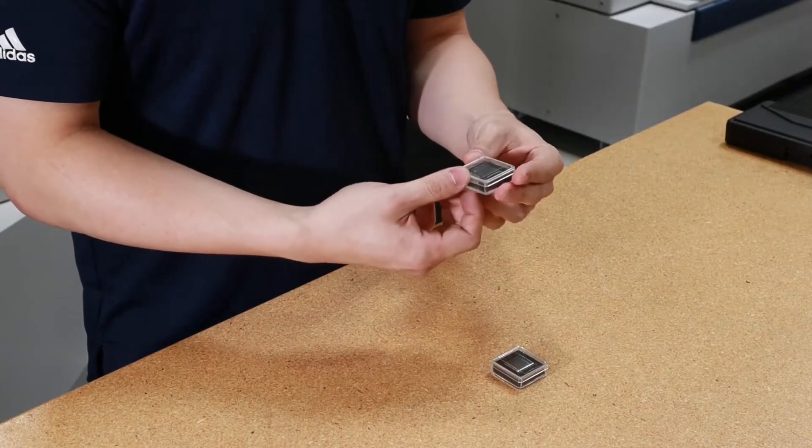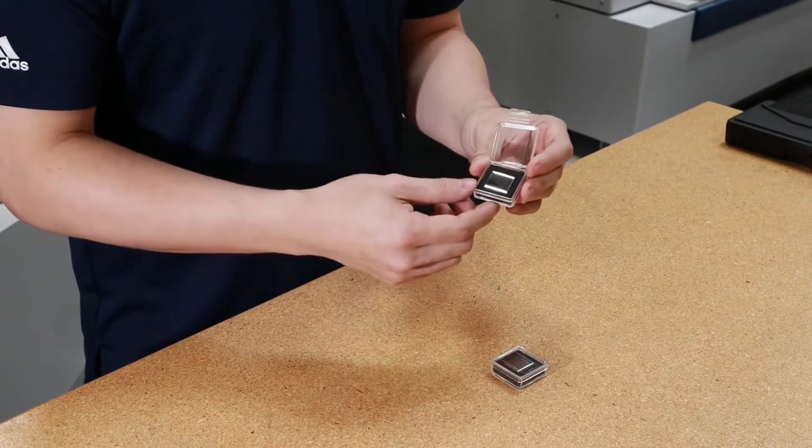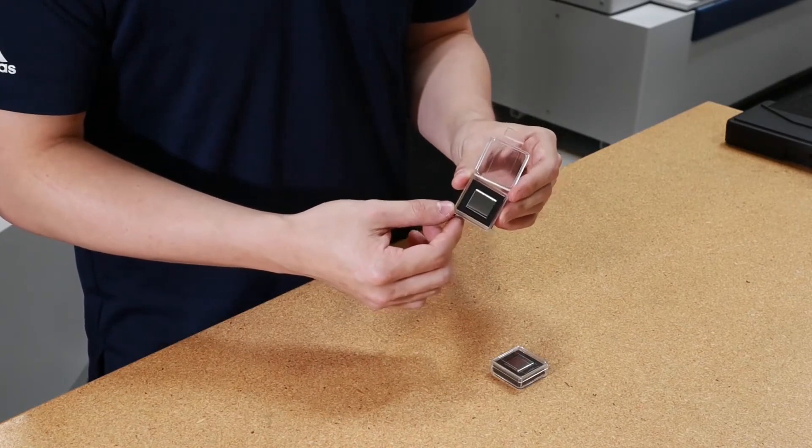This is what a carbide contact looks like. There are two of them - one goes in the upper head and one goes into the lower head.